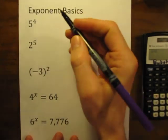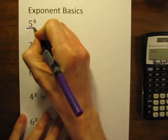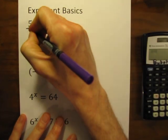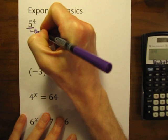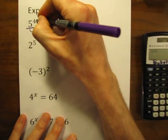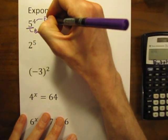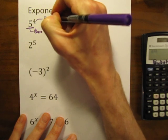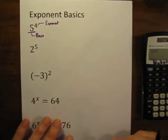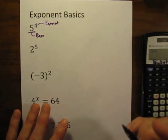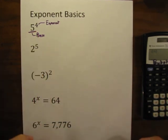When you have a number written like this, some vocabulary: this big number on the bottom is going to be our base, and this small number up at the top is our exponent. So what does that mean exactly? What does 5 to the 4th power — which is how that's said — what does that actually mean?